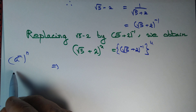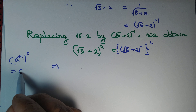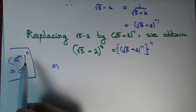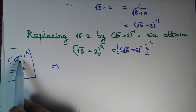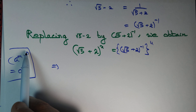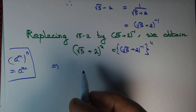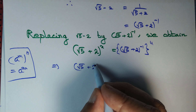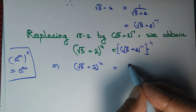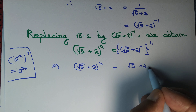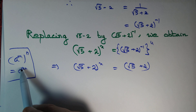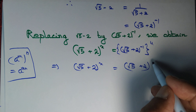We apply the law of indices: (a^m)^n = a^(mn), meaning power of a power — we simply multiply the powers. This gives (√5 + 2)^x = (√5 + 2)^(-1 × 11) = (√5 + 2)^(-11).